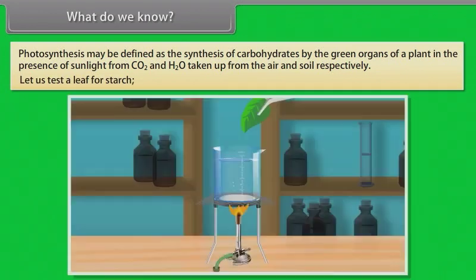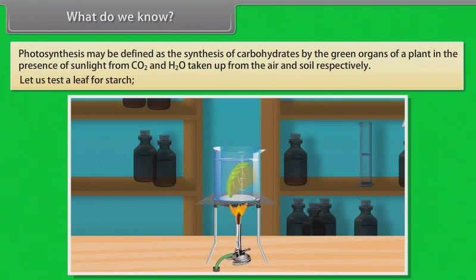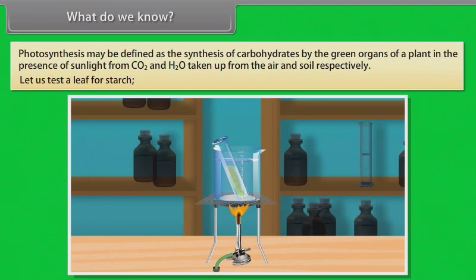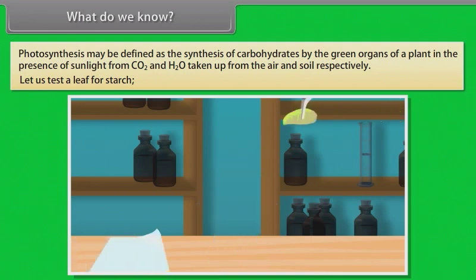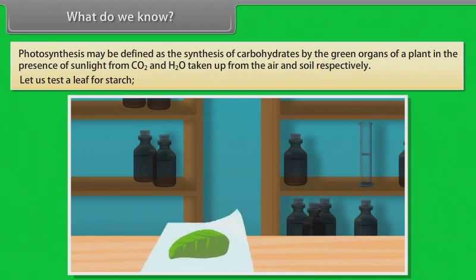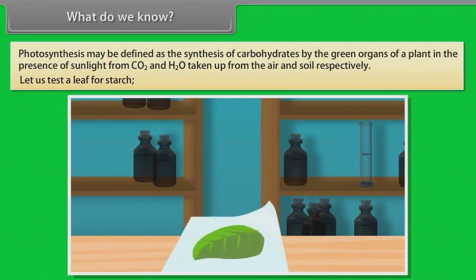Remove a green leaf from a plant. Use forceps to place the leaf in boiling water and boil for 2 minutes. Then place the boiled leaf in a boiling tube containing 90% ethanol, and place the tube in hot water until the leaf decolorizes. Remove the leaf, wash it with cold tap water, spread it on a white surface, and add a few drops of iodine solution. The leaf turns dark blue, indicating the presence of starch and proving that photosynthesis occurred.